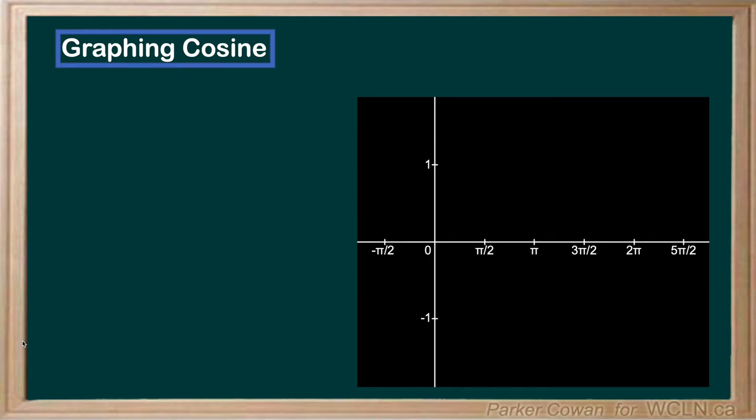Using our results from the unit circle we found previously, let's plot the points of a cosine as well. Again we use the inputs as our x-axis and the output as our y-axis.